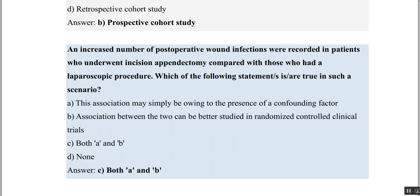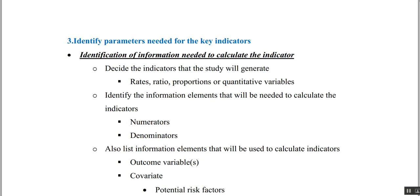An increase in postoperative wound infections was recorded in patients who underwent incision appendectomy compared to those who had laparoscopic procedures. The association may be due to the presence of a confounding factor — some other factors may play a role in affecting infections in both procedures. Also, the association between the two can better be studied in an RCT. So both A and B are true in this scenario.